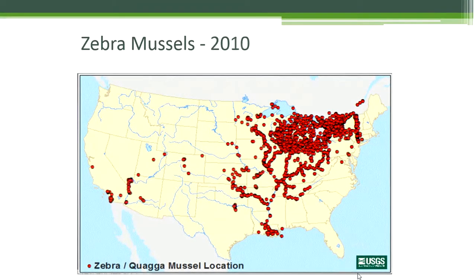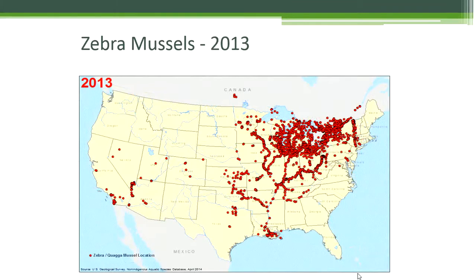By 2010, zebra mussels had spread into the western U.S. Most recently, the zebra mussel is still spreading, though the rate of spread has slowed.